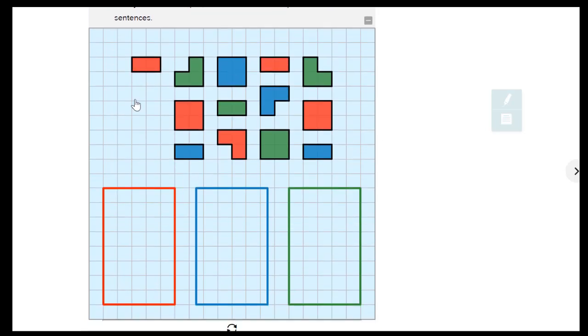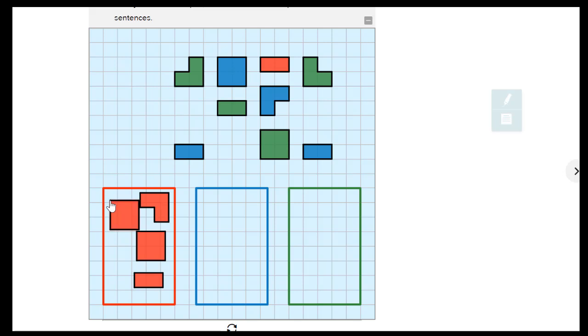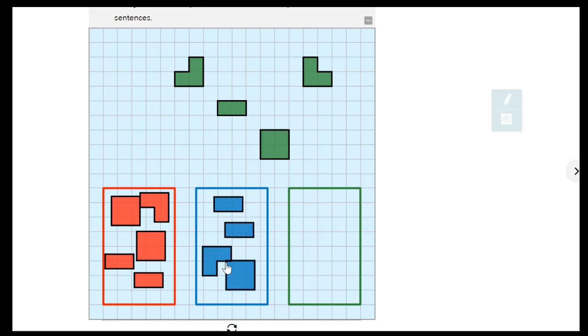I'm going to start by putting all of the red blocks into that red rectangle at the bottom. We have some fun shapes, and we got one more here. And my blue box, I'm going to put my blue blocks in the blue rectangle like that. And finally my green blocks, we'll put in here.